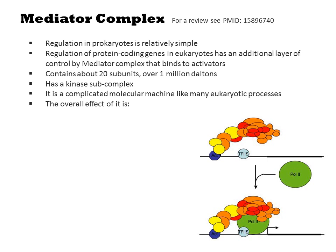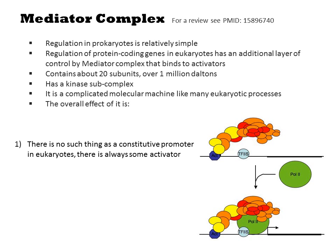The overall effect is that there's no such thing as a constitutive promoter in eukaryotes — there is always some activator. Mediator doesn't directly bind to the DNA. How operator sites influence each other is also less intuitive. All the same mechanisms, such as looping and competition for binding, are still at play, but often these operate over long distances that cannot be explained simply based on biophysical ideas.